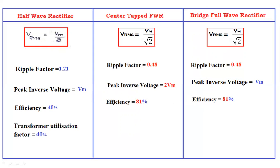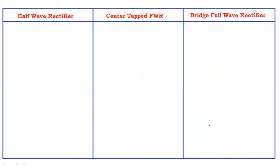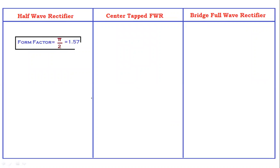The transformer utilization factor of the half wave rectifier is 40%. For the center tapped full wave rectifier, the transformer utilization factor is 81%. The transformer utilization factor of the bridge full wave rectifier is also 81%. Now let's look at the form factor.